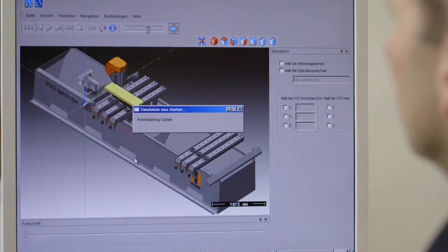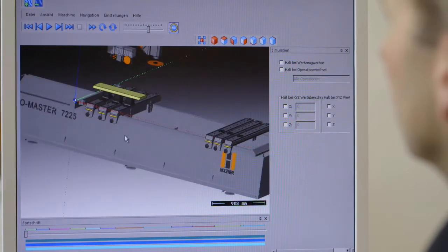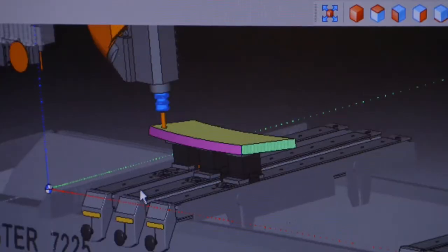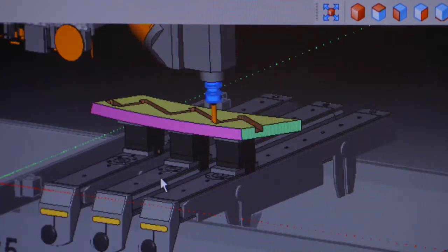The three-dimensional milling simulation of the CNC programs is standard and can be upgraded to a collision control for vacuum cups and consoles, ideal to preview the programs while still in the office.